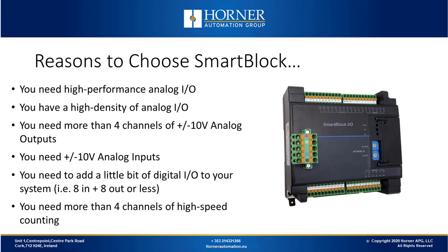Why would I choose Smart Block? If you need high performance and high density analog, it's perfect for you. You may need more than 4 channels of plus or minus 10 volt analog outputs, or you need plus or minus 10 volt analog inputs. Maybe you only need a few digital inputs and outputs — the cheapest way to do that is to use a Smart Block DIQ 880 or Smart Block DIQ 881, which will allow you to add a little bit of IO to an OCS application for the least amount of money. You may also need more than 4 channels of high speed counting.